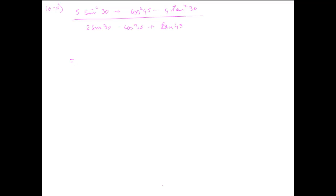That's 5 times sine 30 is half so one-fourth, cos 45 is 1 by root 2 the whole squared, minus 4 times tan 30 that's 1 by root 3 the whole squared.